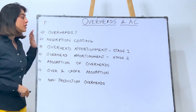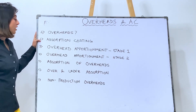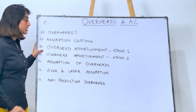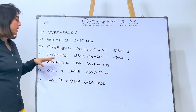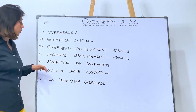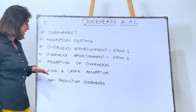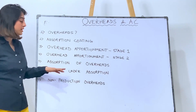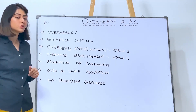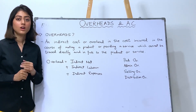The first topic is Overheads. Second, Absorption Costing. Third, Overhead Apportionment Stage 1. Fourth, Overhead Apportionment Stage 2. Fifth, Absorption of Overheads. Sixth, Over and Under Absorption. And finally, Non-Production Overheads.